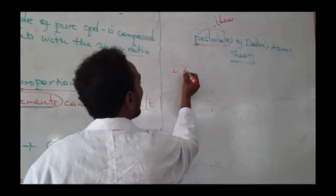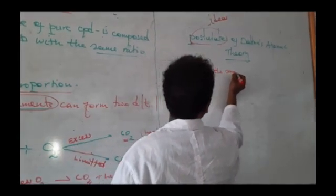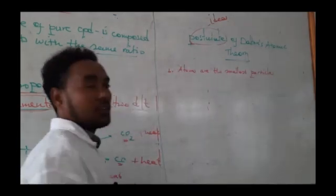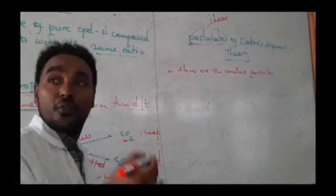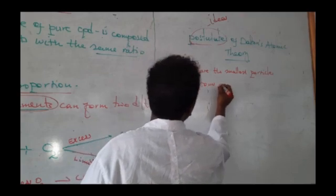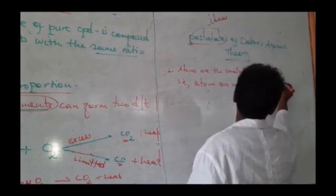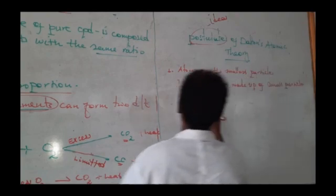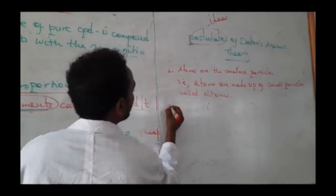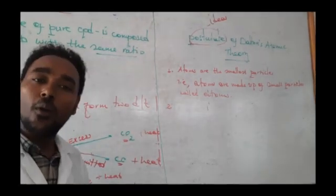According to Dalton, the first idea is that atoms are the smallest particles. Atoms are made up of small particles called atoms. The second postulate is that atoms are indivisible and indestructible. Note that this idea was disproved by modern atomic theory.